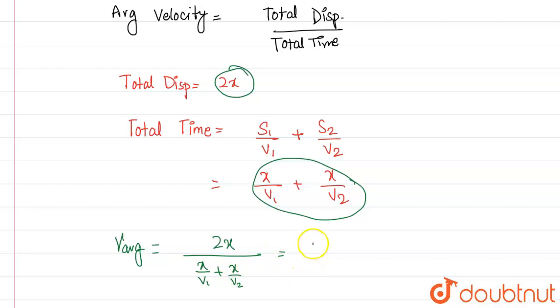So if you see, we can take x as common and this will come out to be 2 by 1 by v1 plus 1 by v2. And this will come out to be 2v1v2 upon v1 plus v2.